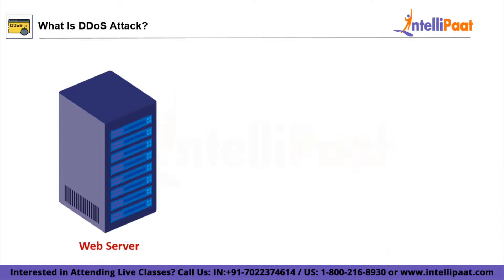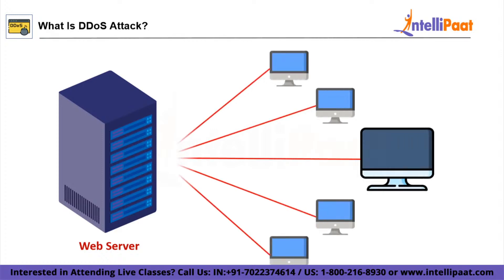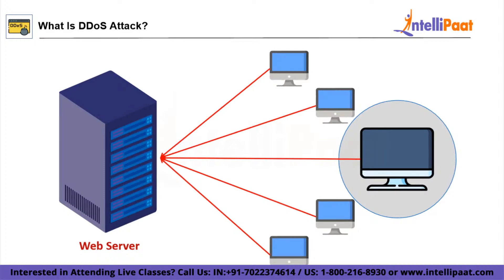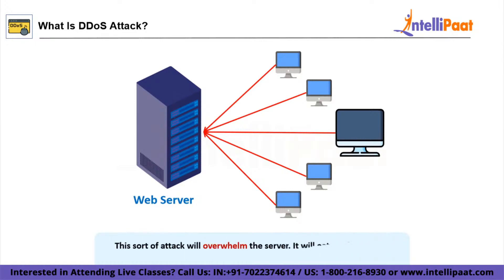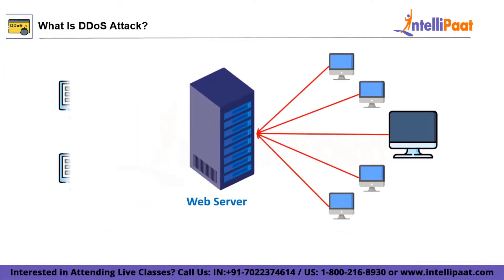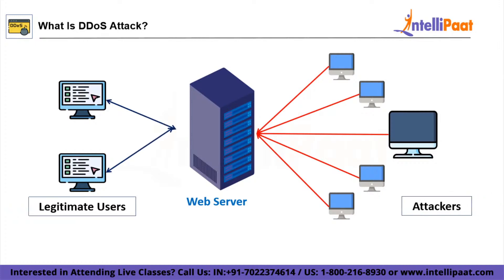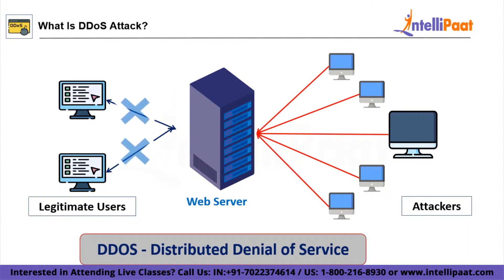The problem arises when an attack comes from multiple sources all at once. A ringleader computer coordinates the attack on Stephen's web server from a multitude of locations, communicating with other computers around the world. Instead of a single-source attack, the server now has to deal with attacks from multiple sources simultaneously, which overwhelms it. This eats up the server's system resources such as memory, CPU, and network bandwidth — this is called a Distributed DoS attack.